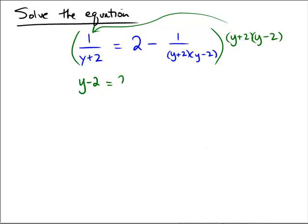Equals — in the next slot we have 2 multiplied by y plus 2 and y minus 2, giving us y squared minus 4. Minus — in the last place, y plus 2 and y minus 2 both cancel, so we're left with the number 1.